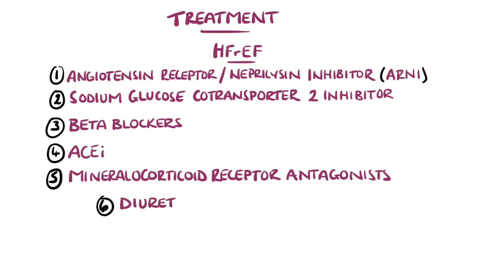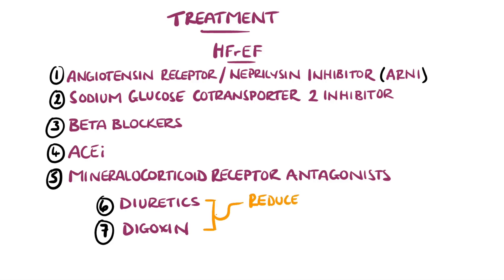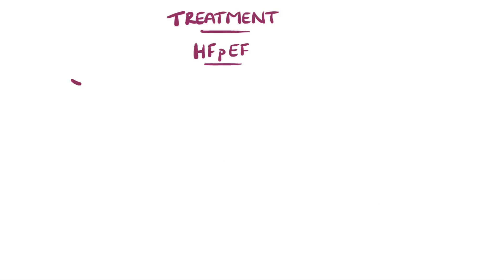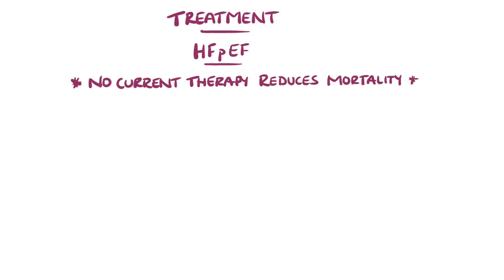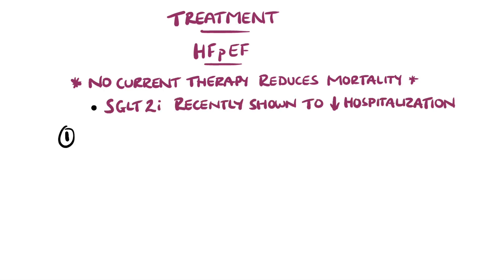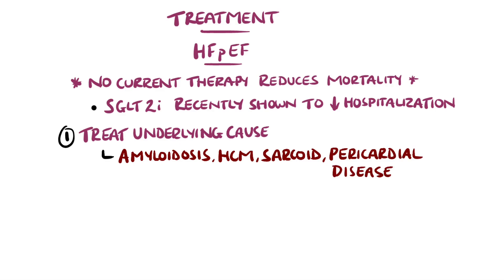Diuretics are used to reduce symptoms. They help to reduce blood volume and in combination with salt restriction help reduce fluid retention. They do not however reduce mortality. Digoxin can cause an increase in the cardiac output and may also improve symptoms. At present, there are no therapies that have convincingly shown to improve the prognosis in heart failure with a preserved ejection fraction, but symptom control may be achieved with medications used in heart failure with a reduced ejection fraction. In both cases, control of underlying risk factors and lifestyle improvements are also recommended.